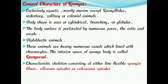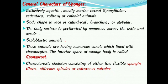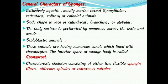The body shape is vase-shaped, cylindrical, branching, or globular. The body surface of Porifera is perforated by numerous tiny pores called ostia, through which water enters the body. One or more large openings are also present, called the osculum, which is the largest pore, through which water passes out from the body of Porifera.